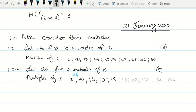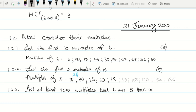That is question number 1.2.2. Question number 1.2.3 is the following, and it says list at least two multiples that 6 and 15 have in common, and that's why actually I extended it. The question says list at least two multiples that 6 and 15 have in common.